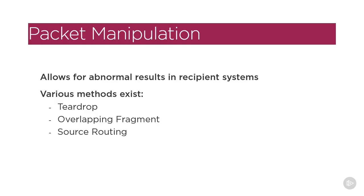Source routing attacks, which occur if the network infrastructure allows packets that have source routing specified, which will allow for an attacker to predefine the path they wanted their packets to take to their destination, which can lead to the attacker gaining access to systems that they wouldn't otherwise have access to via systems that are connected to multiple networks.